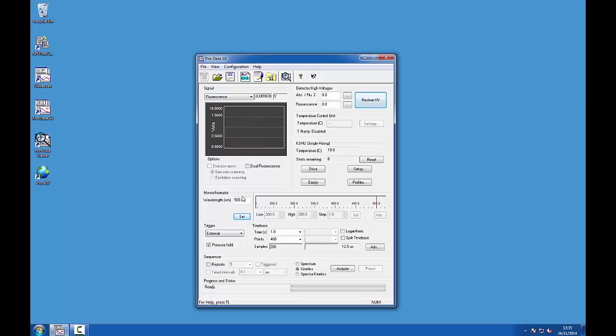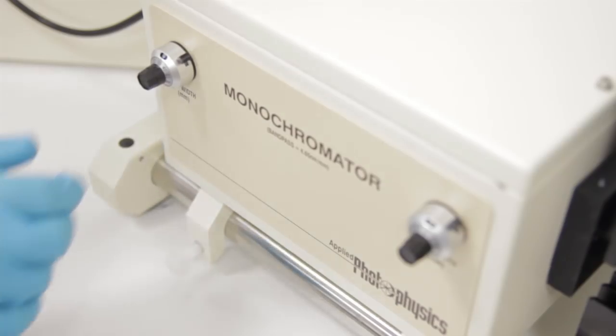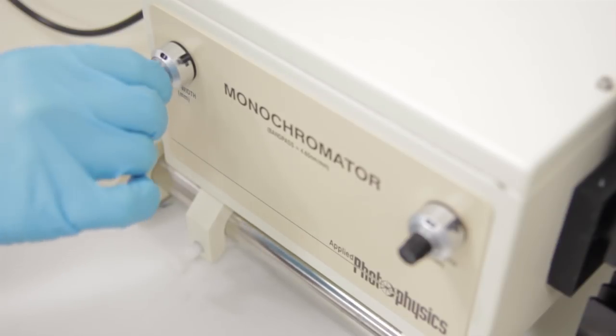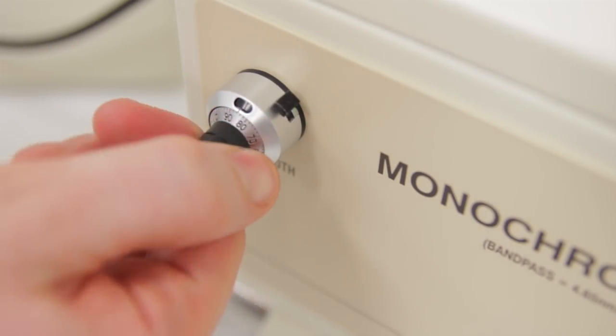Use the spectrometer control panel to set the wavelength to your desired value. Fluorescence measurements generally require more light than do absorbance, so it is often necessary to increase the slit settings on the monochromator. Slit settings of two millimeters and above are generally used for fluorescence experiments.